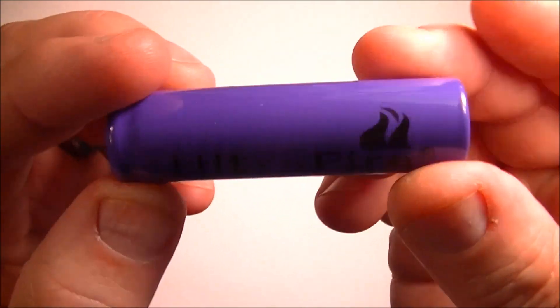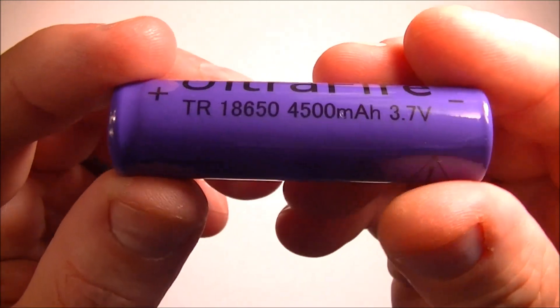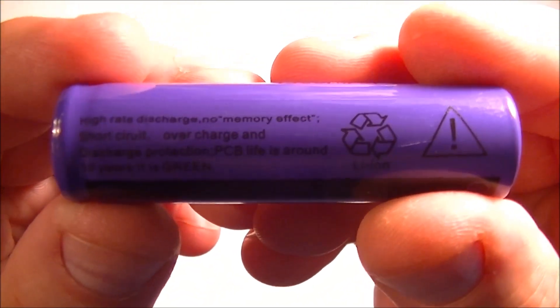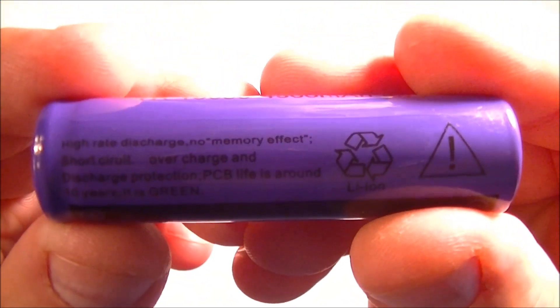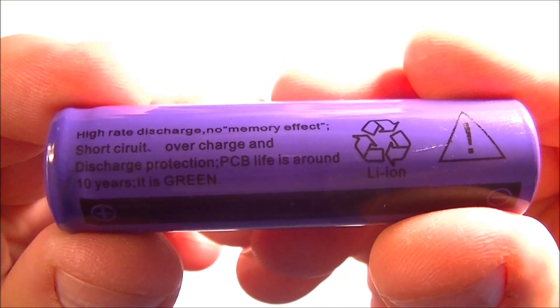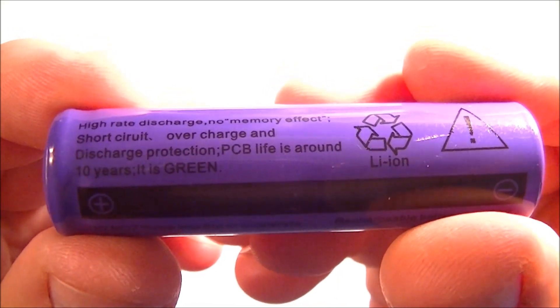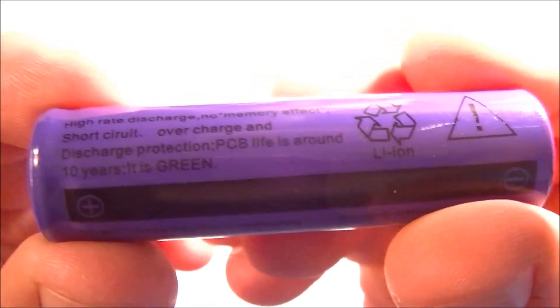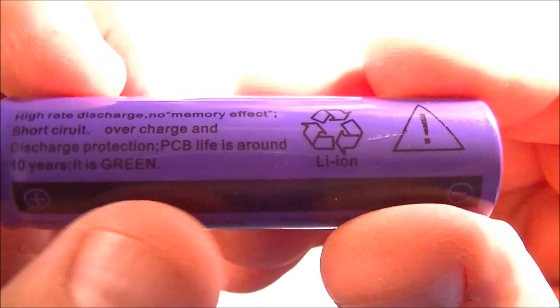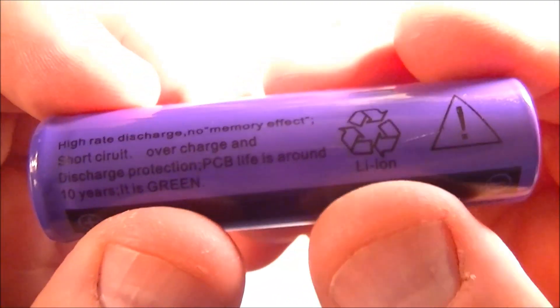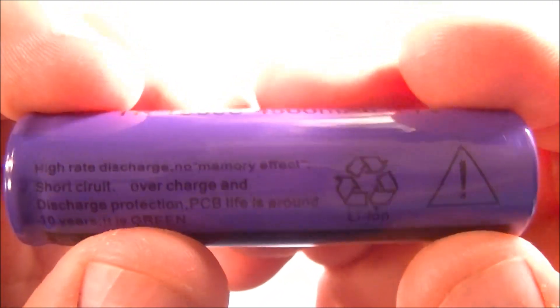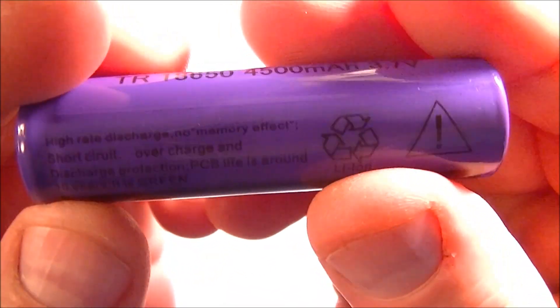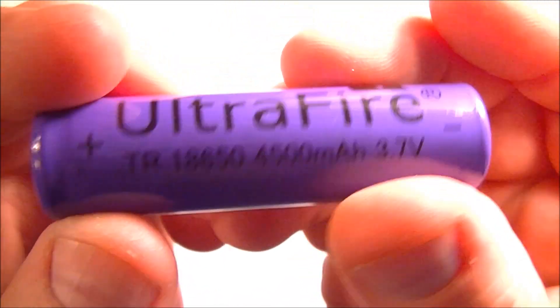This is a battery I use on my flashlights. If you can read it there it says high rate discharge, no memory effect, short circuit overcharged and discharge protection, PCB life is around 10 years, and yeah it is green. Well you gotta love the Chinese, it says lithium ion here, and I'm pretty sure it's not going to be that great when I take it apart.